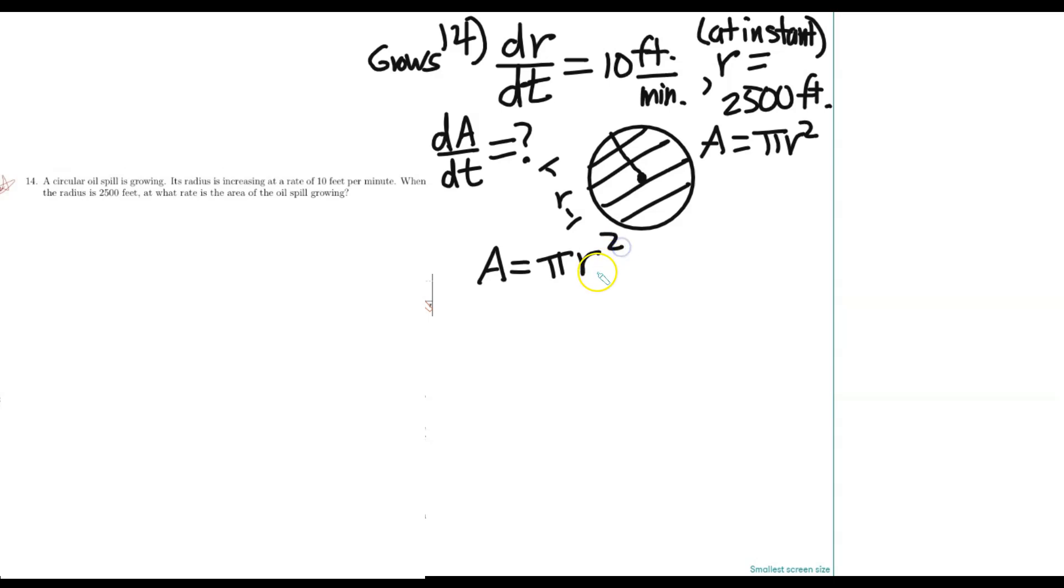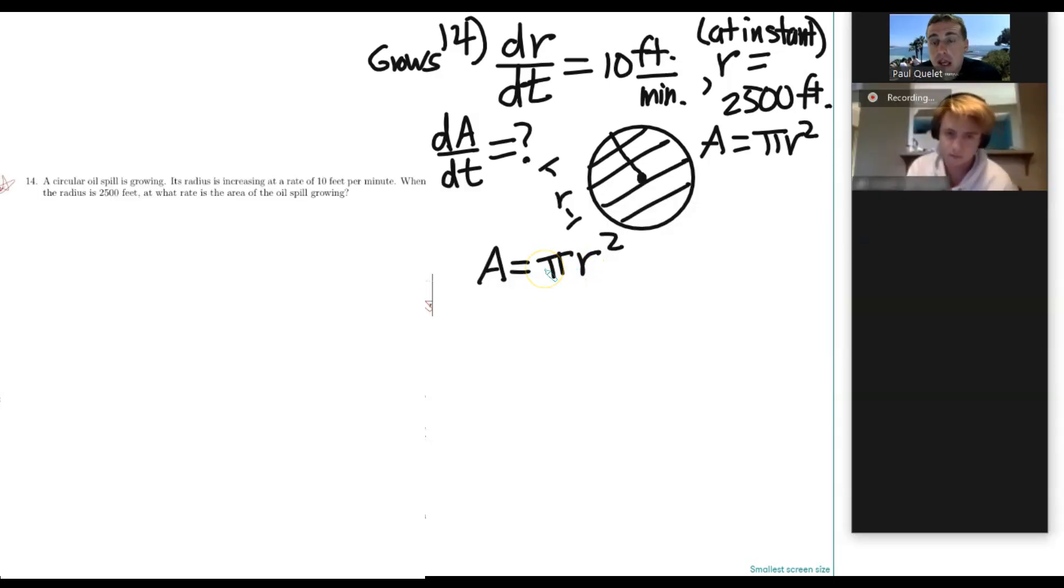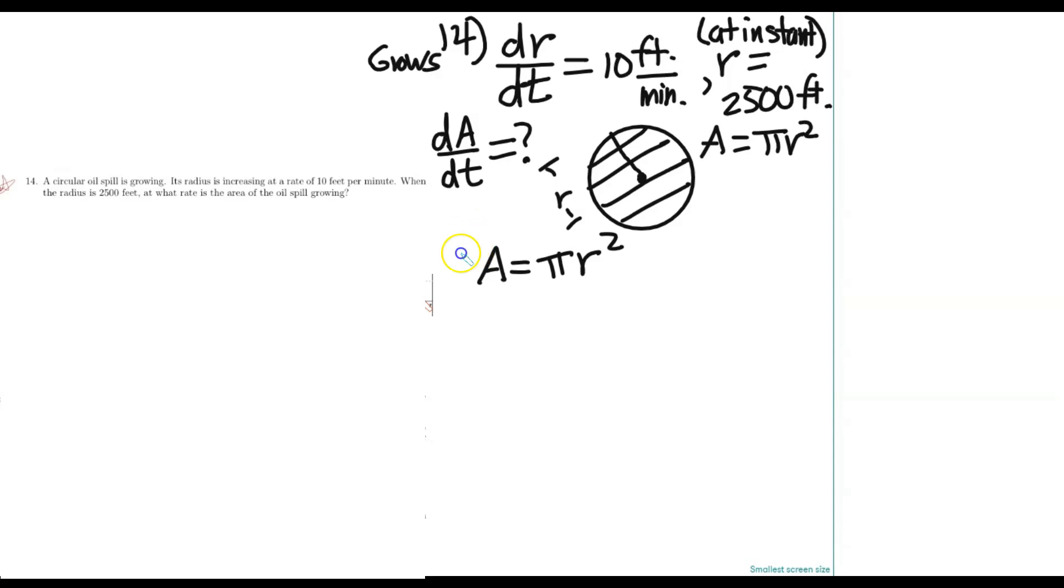Now, by the way, whenever you're doing these related rates problems, it's important to come up with the basis equation, like the equation that relates things together. Because in this case, area is a function of R. But now, this is the important step. We're going to hit both sides with a calculus step. We're going to hit both sides with what sort of operator? Yeah, D over DT. Because we're interested in the time rate of change.